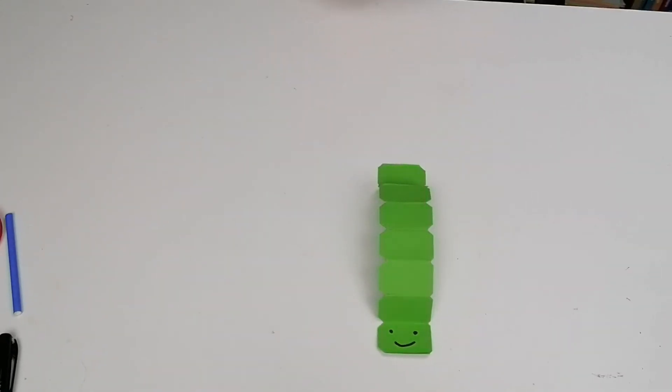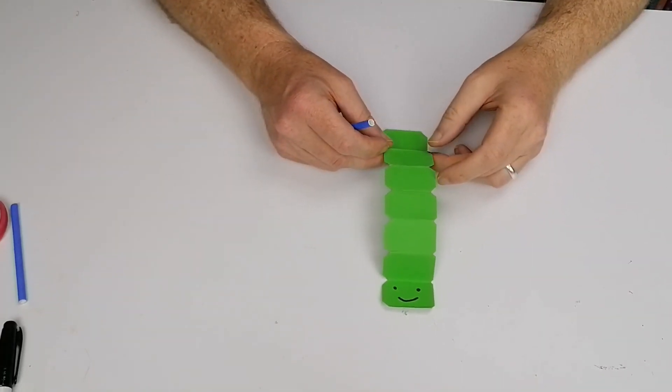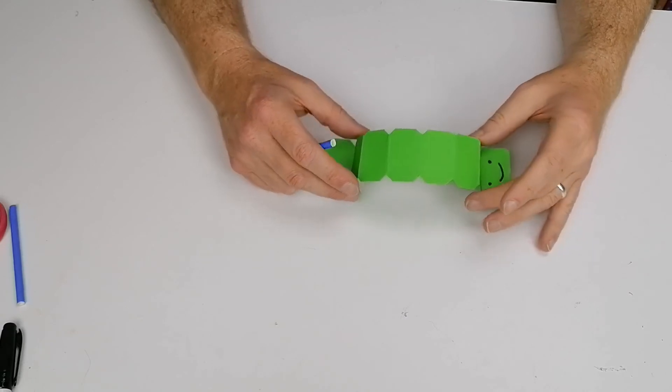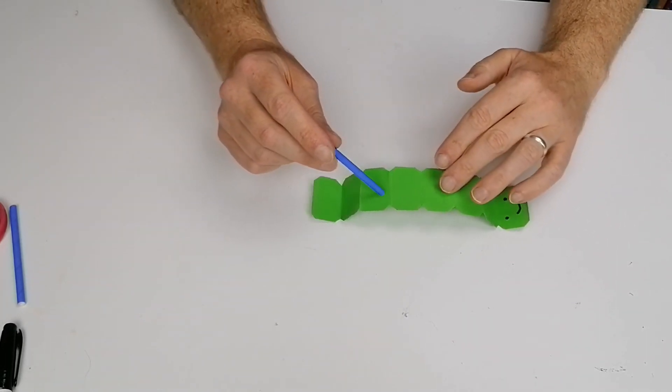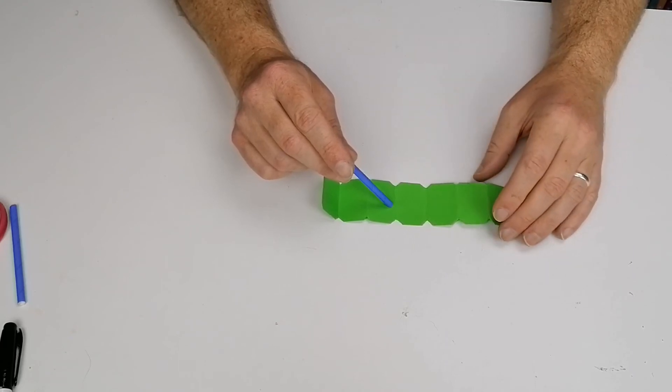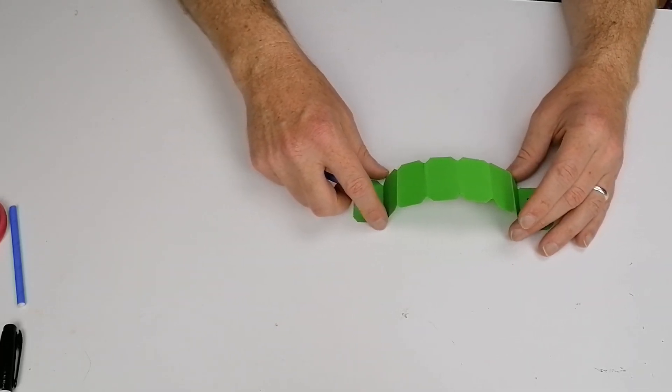It moves across the table very slowly which is great. If there's a few of you here I'd recommend this and maybe do a little race. One of the things about it is that what you're trying to do - I'll show it to you from the side - is you're trying to blow down from this direction, push the caterpillar down, and then as it comes back up it'll move forward a little bit.